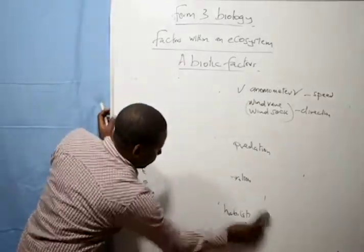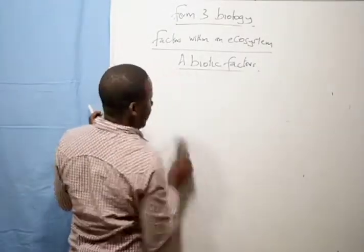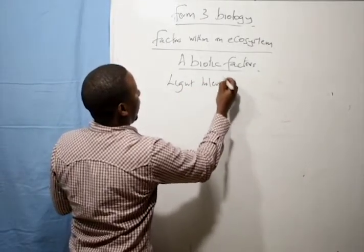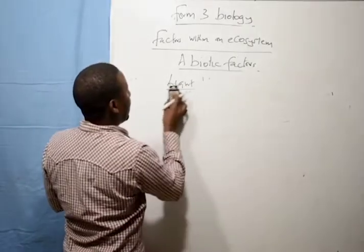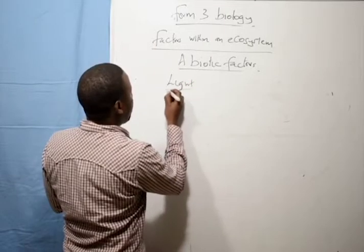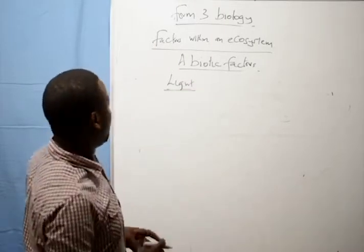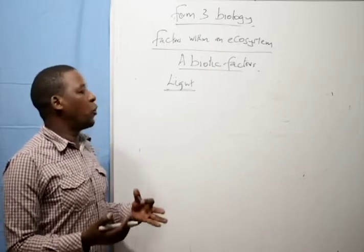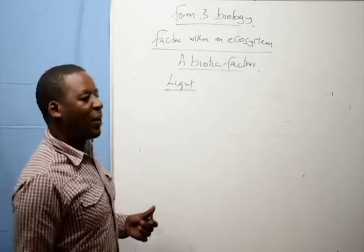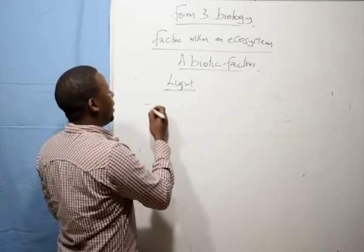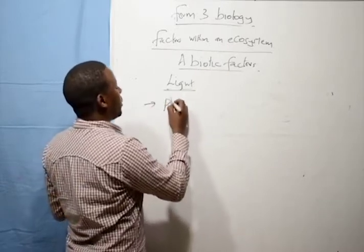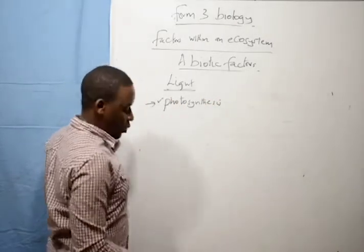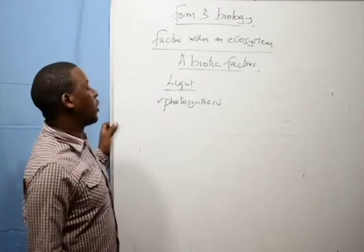The other factor I want us to look at is light, light or light intensity. Light is a very important factor within an ecosystem. First of all, light is used by green plants to make food, food that is fed on by other organisms within an ecosystem. So it aids in or it is very important in photosynthesis. That is in making of food. Light is quite important in the making of food, green photosynthesis.